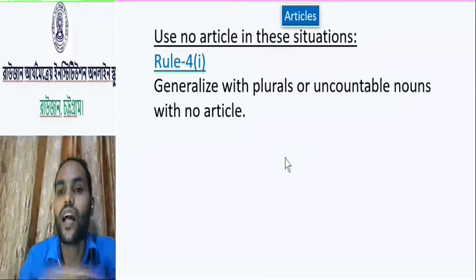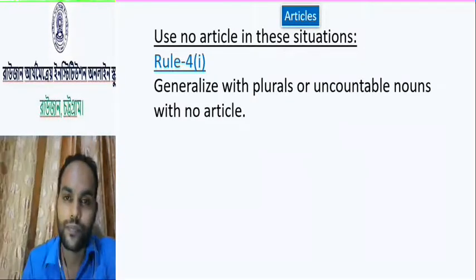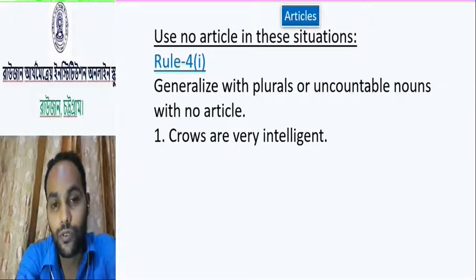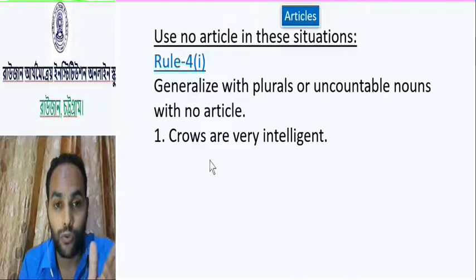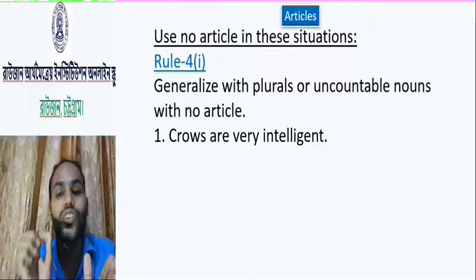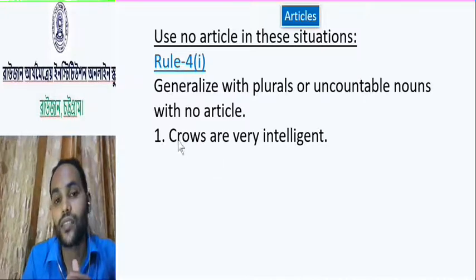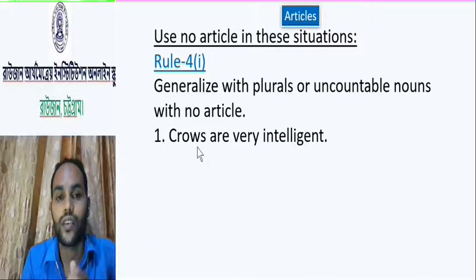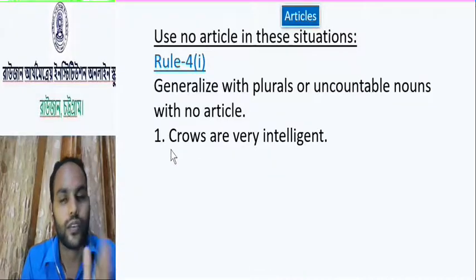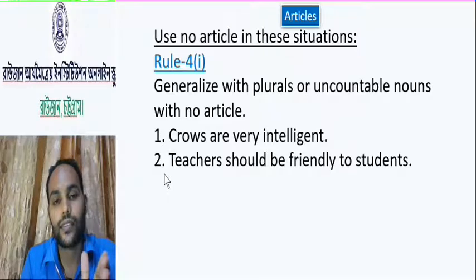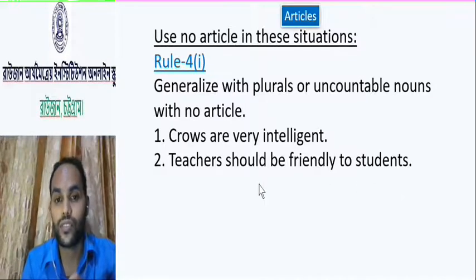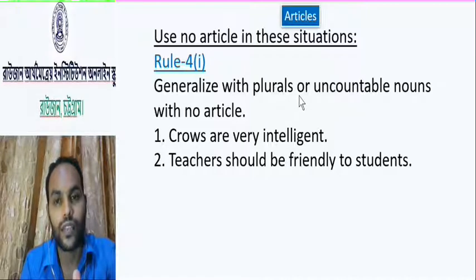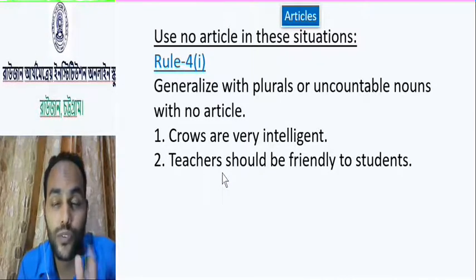Generalize with plural or uncountable nouns — no articles. For example: 'Crows are very intelligent.' 'Crows' is a noun, but it is plural, not singular. So we will not use articles before it. Sentence two: 'Teachers should be friendly to students.' 'Teachers' is a plural form, so we will not use articles before it.